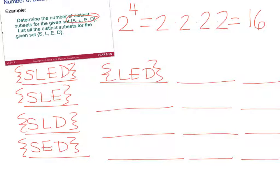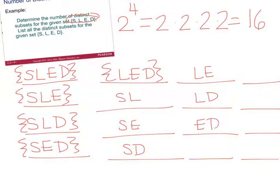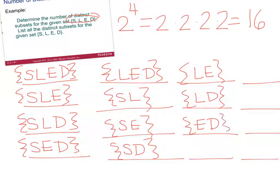We could have groups of two: pair S-L, S-E, S-D, then L-E, L-D, and E-D. You could also have groups of one — subsets containing just S, just L, just E, and just D.